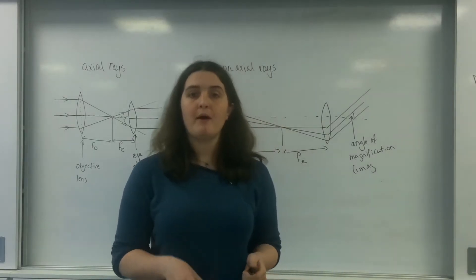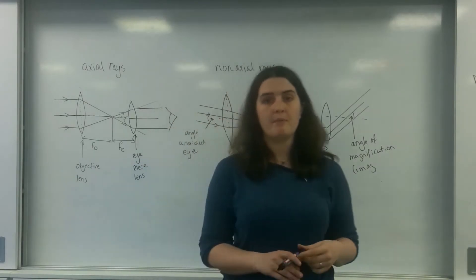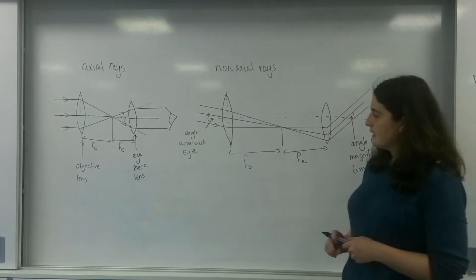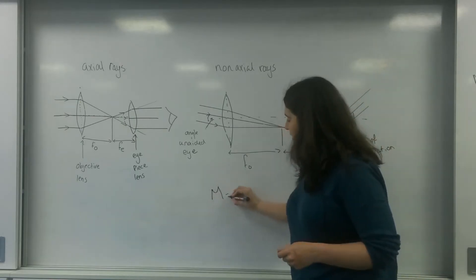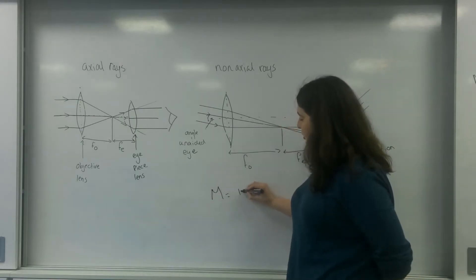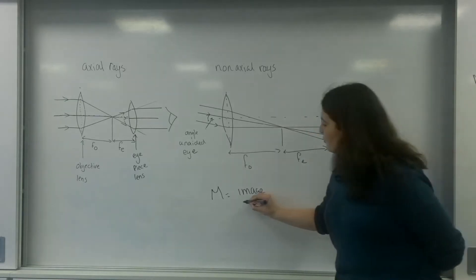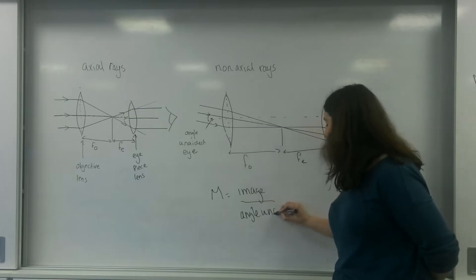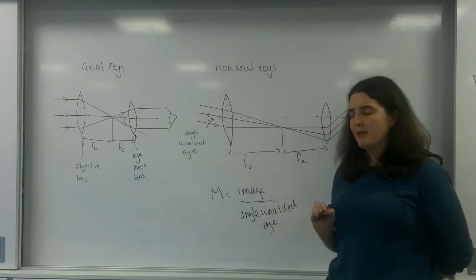And what I'm going to talk about is the magnification for this. So in a previous video I spoke about angular magnification and the idea that magnification is the image, so the angle that you make from the image here, divided by the angle of the unaided eye. In other words, what you see coming in normally.